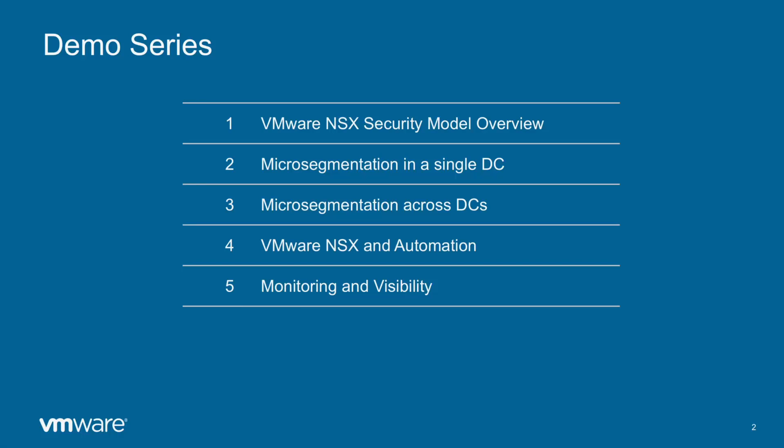On the first video we have already seen an introduction to the NSX security model and its distributed firewall. On the second one we have seen how to apply micro-segmentation inside one single data center. On this video we will extend that concept and see how to apply micro-segmentation across data centers and how policies keep being enforced while VMs migrate from one data center to the other. On the fourth video we will see how to use NSX with automation tools and the benefits from that, for example to build a private cloud environment.